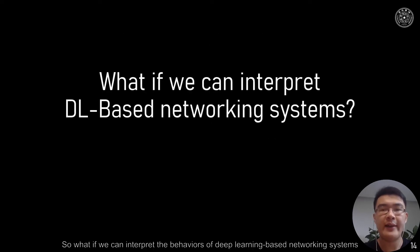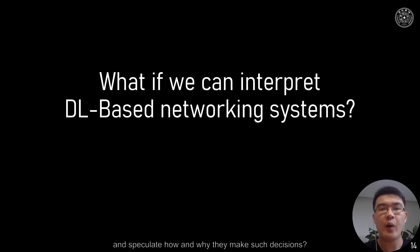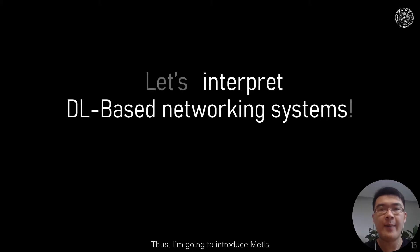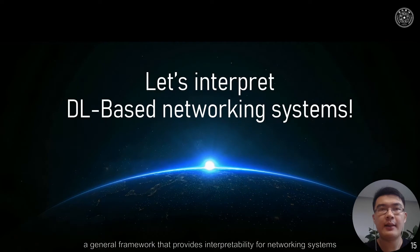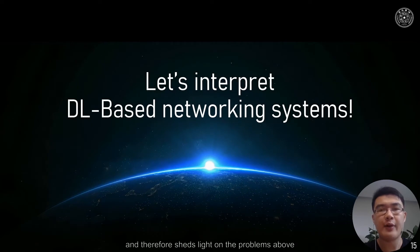So what if we can interpret the behaviors of deep learning-based networking systems and speculate how and why they make such decisions? Thus, I'm going to introduce MATIS, a general framework that provides interpretability for networking systems, and therefore addresses the problems above.